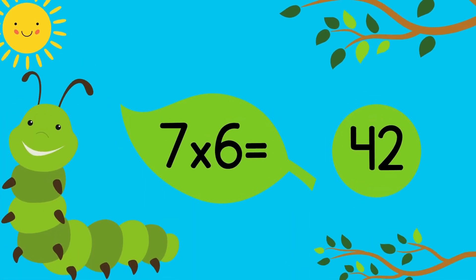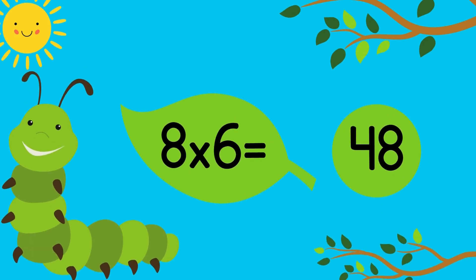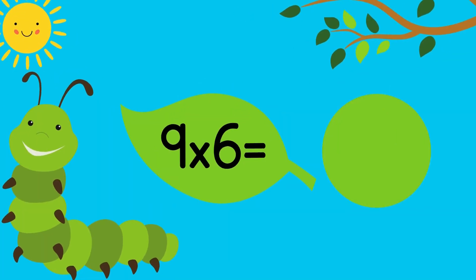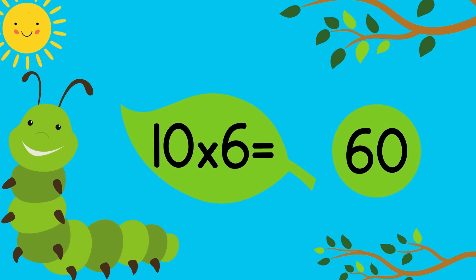7 times 6 equals 42. 8 times 6 equals 48. 9 times 6 equals 54. 10 times 6 equals 60.